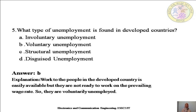The next question: What type of unemployment is found in developed countries? Options are A. involuntary unemployment, B. voluntary unemployment, C. structural unemployment, or D. disguised unemployment. The right answer is B — voluntary unemployment. In this type of unemployment, work is easily available but people are not ready to work at the prevailing or existing wage rate, so they are voluntarily unemployed.